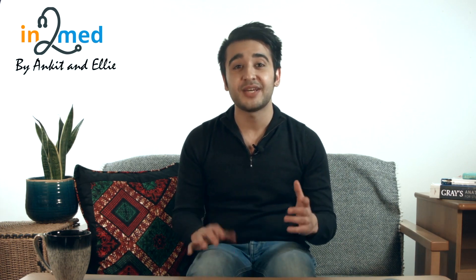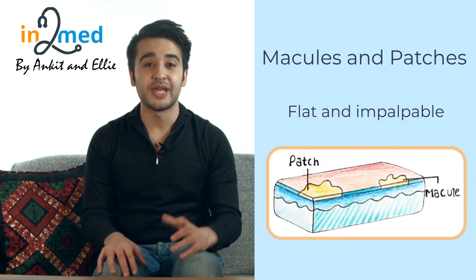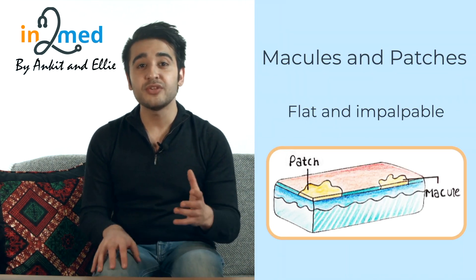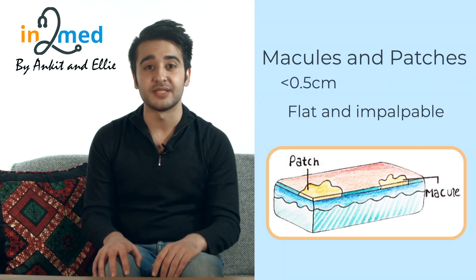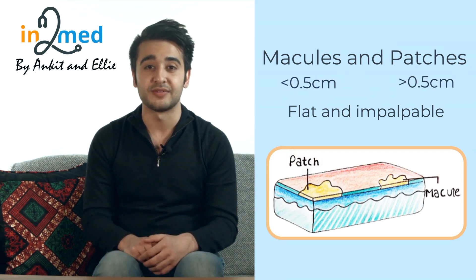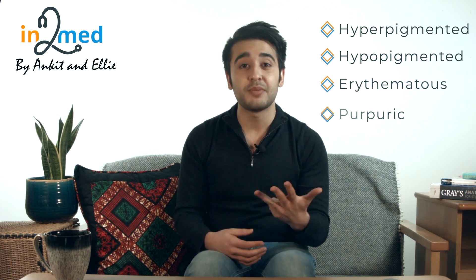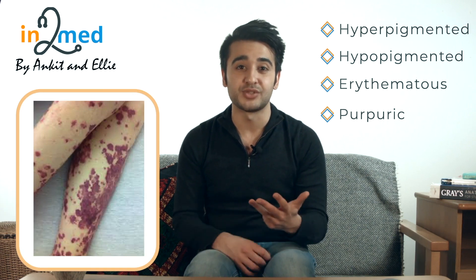The first key terms are macules and patches. These are flat, impalpable areas of skin with no areas of elevation or depression, but they can have a change in surface colour. We use the word macule if it's less than 0.5 centimetres, and the word patch if it's more than 0.5 centimetres. It's important to describe macules and patches by their colour, split into four main categories: hyperpigmented lesions, which are darker in colour than the surrounding skin; hypopigmented areas, which are lighter; erythematous, meaning red; and purpuric, which are purple areas of skin that don't blanch when pressed.